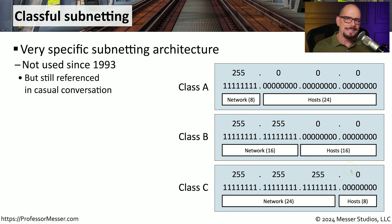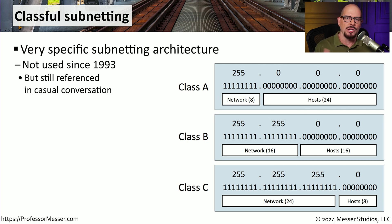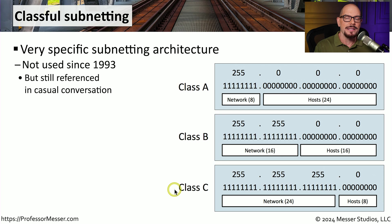This style of class-based subnetting is one that we have not used since 1993. But we still refer to some of these addresses in a very colloquial sense. And although you may hear someone refer to an address as a class A address or a class C address, in reality, we no longer use a class-based form of subnet masking.